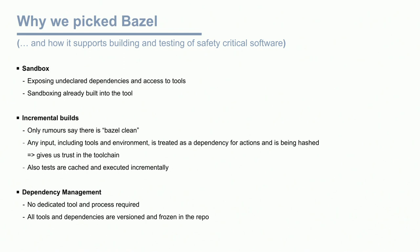Next is incremental builds. As your codebase grows, you need a tool that supports incremental builds, and the benefit is we can also run incremental tests now — that increased the velocity of our developers a lot. It's written on the slide: only rumors say there's a Bazel clean. Our developers were used to 'it doesn't work, let's clean and try again' — but now we've established that if something fails, it's an issue in your rule, your build file, or your code. It's not the build tool. Nowadays people don't clean their workspace anymore.